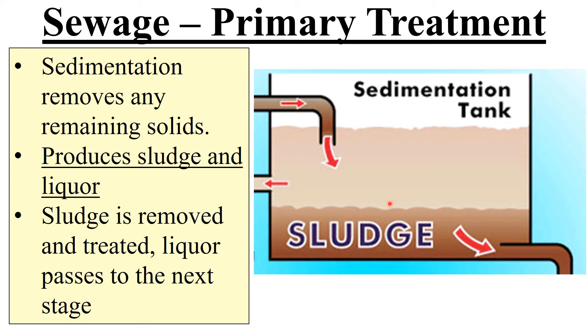If you were looking at it side on, this is what you would see. The sludge goes to the bottom and gets siphoned off somewhere else. And then the liquor moves on to the next stage.